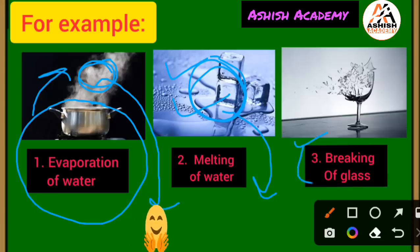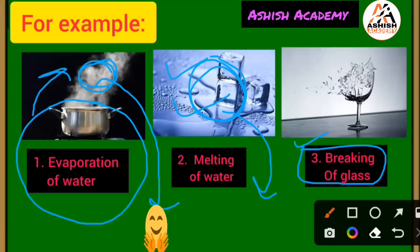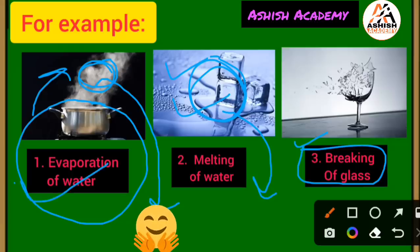Third example: breaking of glass — kaanch ka tootna. Because after breaking glass, it can be reused or recycled. By recycling, you can obtain it back in its original state. So all these changes — evaporation of water, melting of water, breaking of glass — are physical changes.